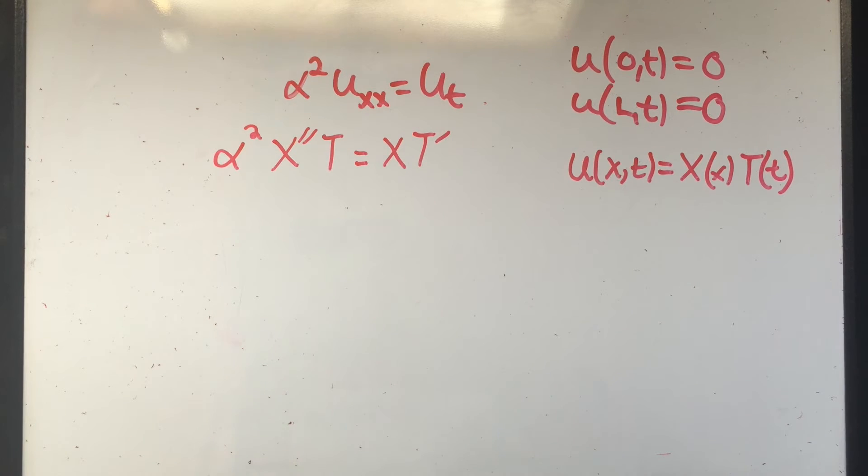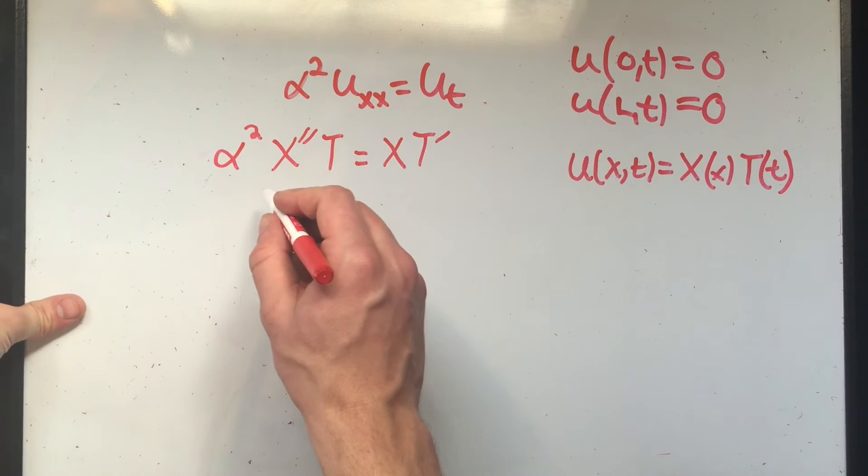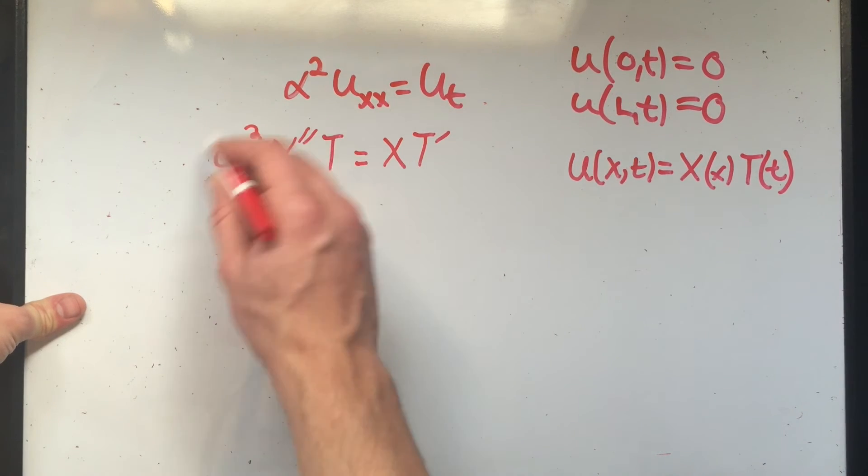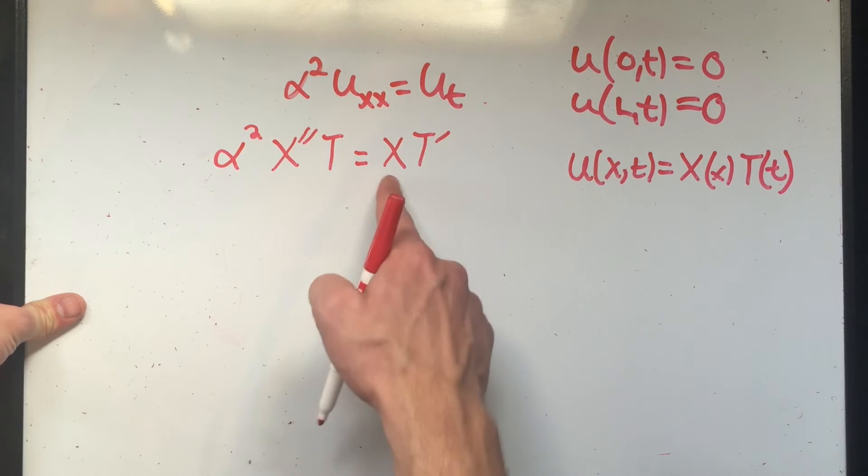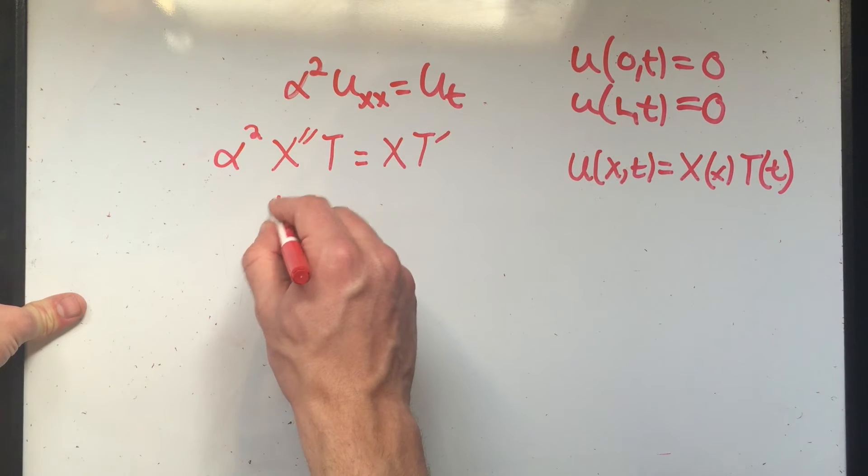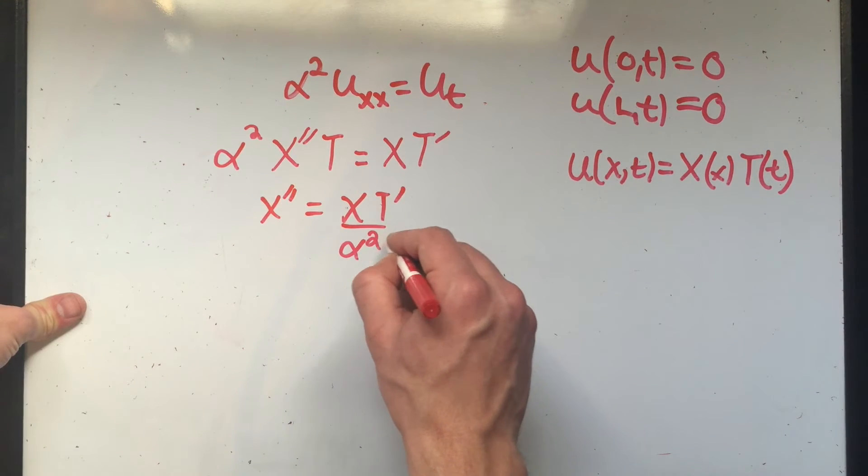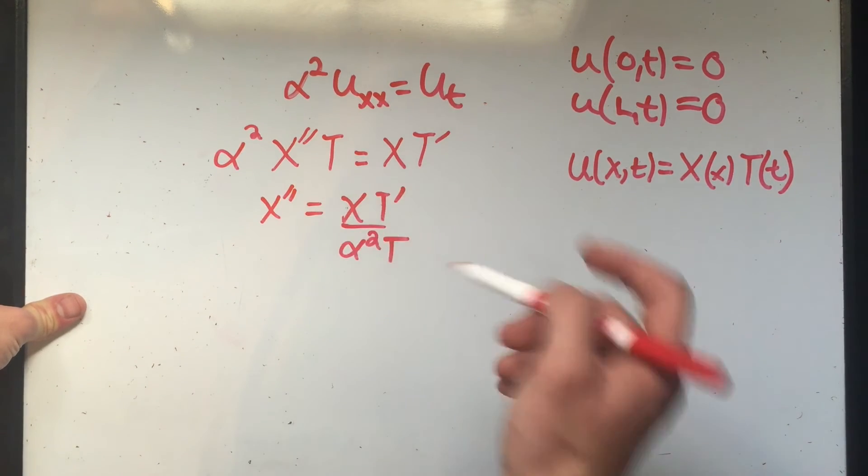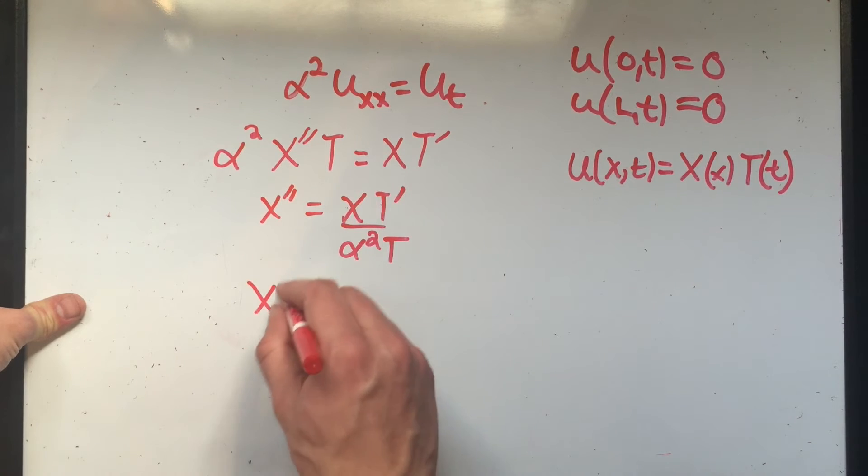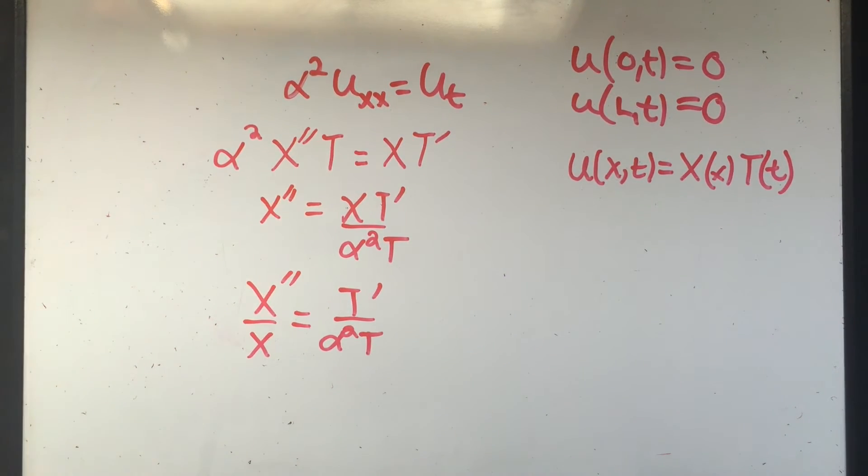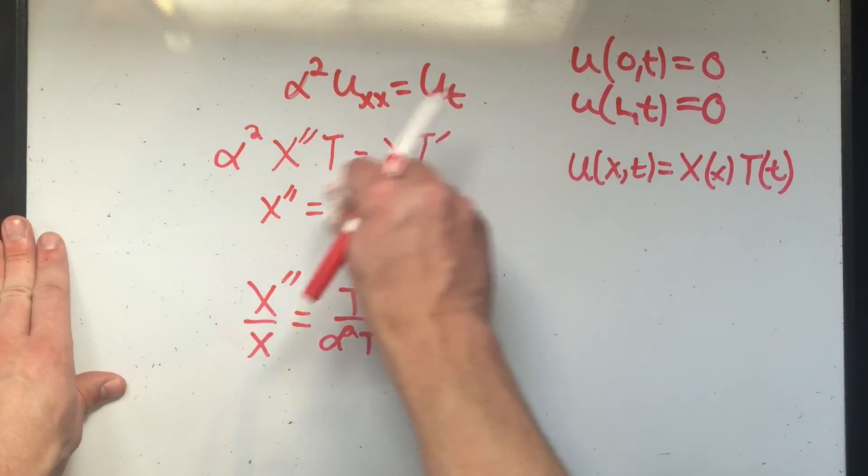Now I can do separation of variables. I can separate this, right? I can divide by T and I can divide by alpha squared and I can divide by X. So if I divide by alpha squared T, I'd get this. And then if I divide by X, I'd get X double prime over X equals T prime over alpha squared T. So I just did a little separation of variables. Nothing too exciting.